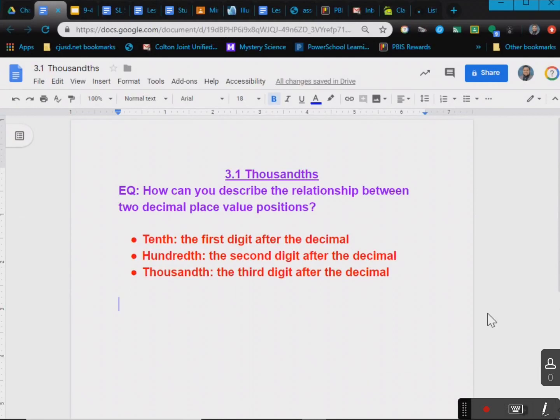Our vocab today is tenth, hundredth, and thousandth. So tenth is the first digit after the decimal, hundredths is the second digit after the decimal, and thousandths is the third digit after the decimal.